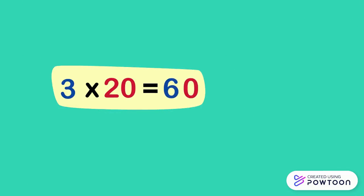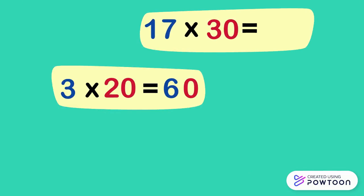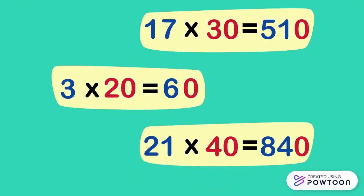3 times 20 equals 60, 17 times 30 equals 510, 21 times 40 equals 840, so what can we notice? We notice...